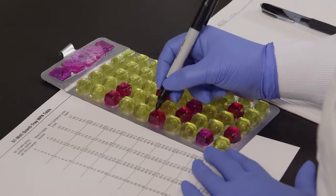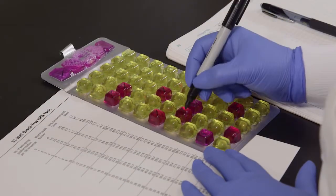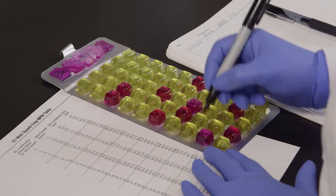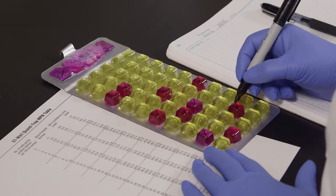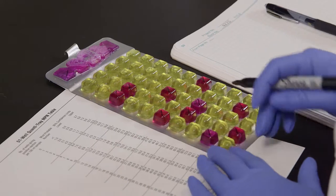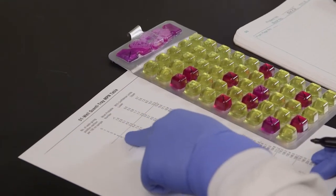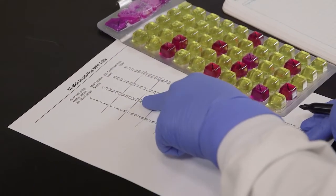To determine the number of total coliforms, count the red or magenta positive wells and then refer to the MPN table included with the QuantaTrays. The most probable number of total coliforms for this example is 12.4 per 100 ml.